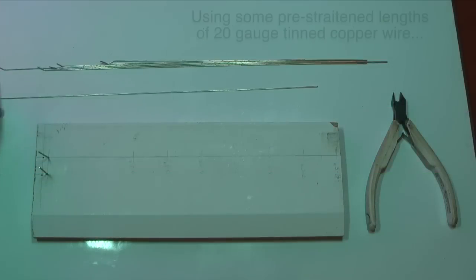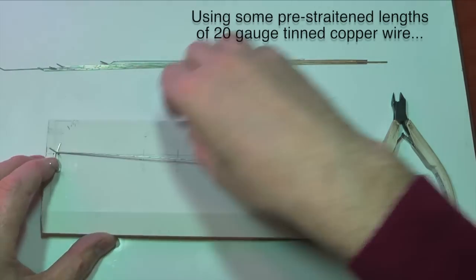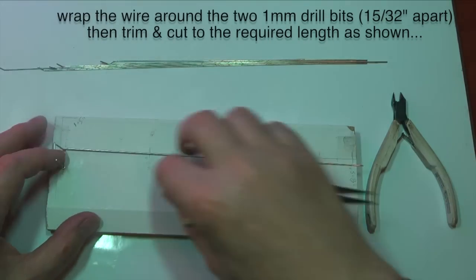The jig is quite simple. It uses some off-cut MDF skirting board with two 1mm drills sunk into it, spaced 15.30 seconds of an inch apart. It also has some markings on it to show where to cut each wire to length.